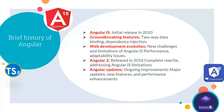If we talk about the brief history of Angular, Angular was initially released as AngularJS in 2010. It was a groundbreaking framework that introduced features such as two-way data binding and dependency injection. However, as web development evolved and new challenges arose, AngularJS faced limitations in terms of performance and adaptability. To address these issues, the Angular team released Angular 2 in 2016, a complete rewrite of the framework. Since then, Angular has undergone several major updates, each bringing new features and performance improvements.